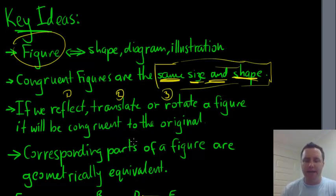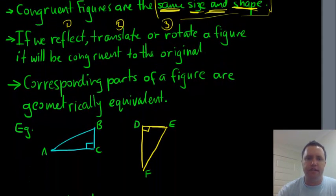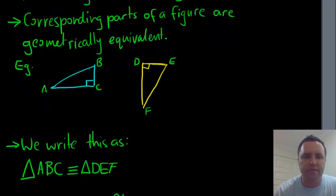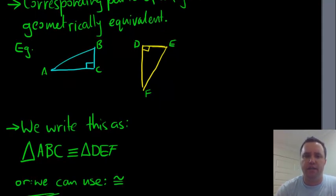And corresponding parts of a figure are geometrically equivalent. We'll see that in the example in a moment. So for example, this triangle and this triangle here are congruent. Despite what my bad drawing looks like. Right, so if we look at it, we can say things like, this triangle ABC is congruent to triangle DEF. And we write this by triangle ABC, and this new equals sign thing here is congruent or equivalent to triangle DEF.